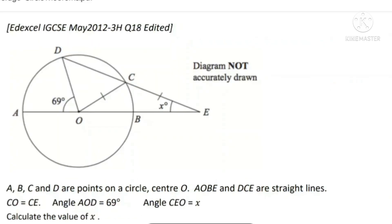The next question: A, B, C and D are points on the circle centred at O. A, O, B, E and D, C, E are straight lines. CO is equal to CE, and angle AOD is equal to 69 degrees. Angle CEO is equal to X. Calculate the value of X.